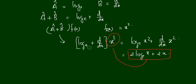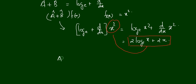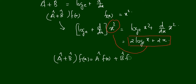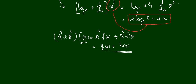So log_e plus d/dx of x² equals 2·log_e(x) + 2x. In generalized form, we can write (A-cap + B-cap) f(x) = A-cap·f(x) + B-cap·f(x) = g(x) + k(x). So f(x) was the original function and the new function is g(x) + k(x). That is the addition of operators. Similarly, you can understand subtraction of operators by replacing the positive sign with a negative sign.